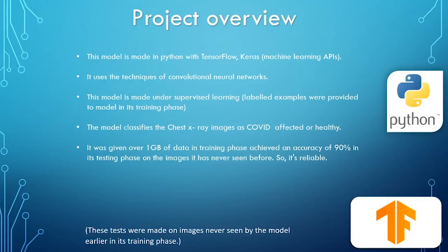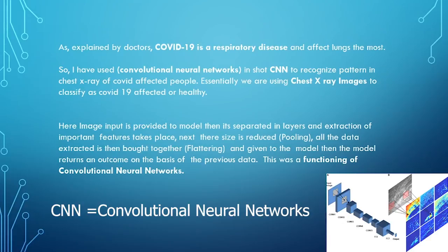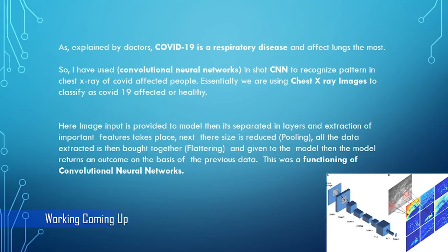The testing images were images never seen by the model, so it's reliable. As explained by doctors, COVID-19 is a respiratory disease and affects the lungs the most, so I've used CNN to recognize patterns in chest X-rays of COVID-affected people. Essentially, we use X-ray images to classify as COVID-19 affected or healthy and extract features from them. Image input is provided to the model, then it's separated into layers and abstraction of important features takes place. Next, their size is reduced — this process is called pooling — and all the data extracted is then brought together, called flattening, and given to the model. The model returns an outcome based on the data it learned during its training phase.